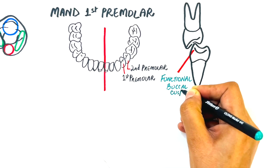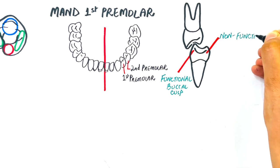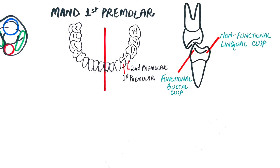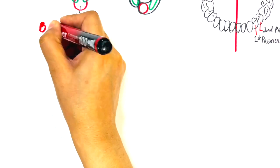The lingual cusp does not form any occlusal contact with the opposing teeth, which is why it's called the non-functional cusp. Since the lingual cusp is really small, underdeveloped, and non-functional, the term bicuspid becomes a misnomer here. The tooth resembles the mandibular canine in that it has a large, only-occluding buccal cusp.